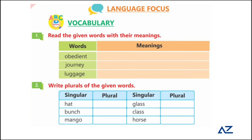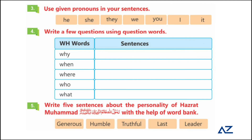Write the meanings of the given lesson words — you can take help from the teacher, but since this is a review exercise, try to do it on your own. Write the plural of the given singular nouns on the spaces provided. Then use the given pronouns in sentences. For example: 'He is playing football.' Write similar sentences in your notebook using the given pronouns.